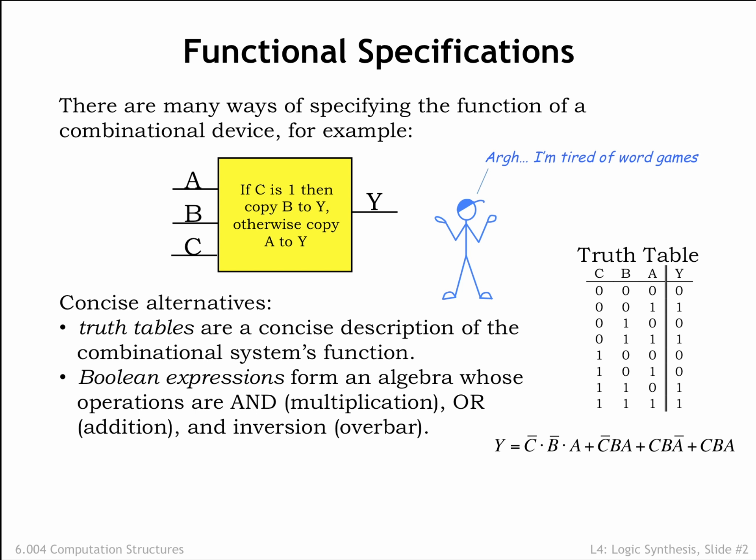In this example, the first symbol following the equal sign is a C with a line above it, indicating that the value of C should be inverted before it's used in evaluating the rest of the expression.